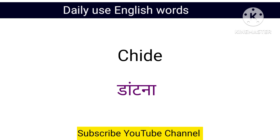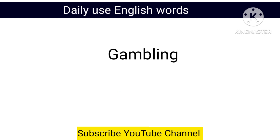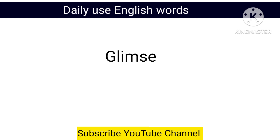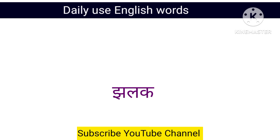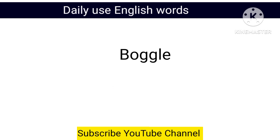Chide — datna. Gambling — jua. Glimpse — jhalak.